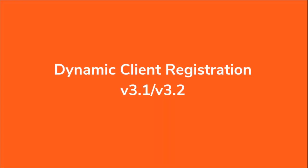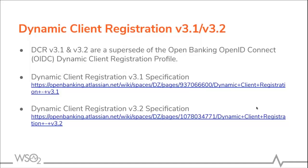Up to now, I have talked about the OpenID Connect specification for dynamic client registration. The next version of specification released for dynamic client registration is version 3.1, and recently they have released version 3.2 as well. DCR version 3.1 and version 3.2 define the APIs for the TPP to submit a software statement assertion to an ASPSP for the purpose of creating auth clients.